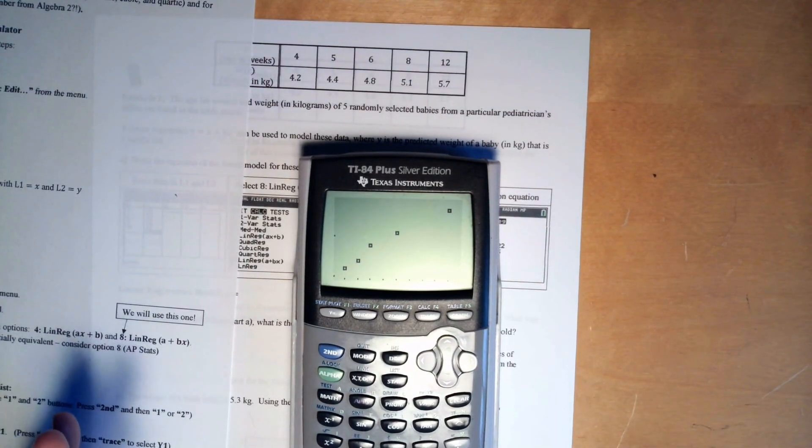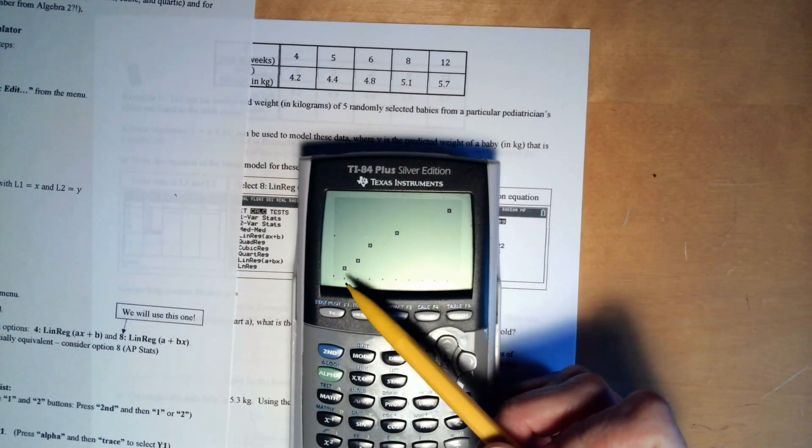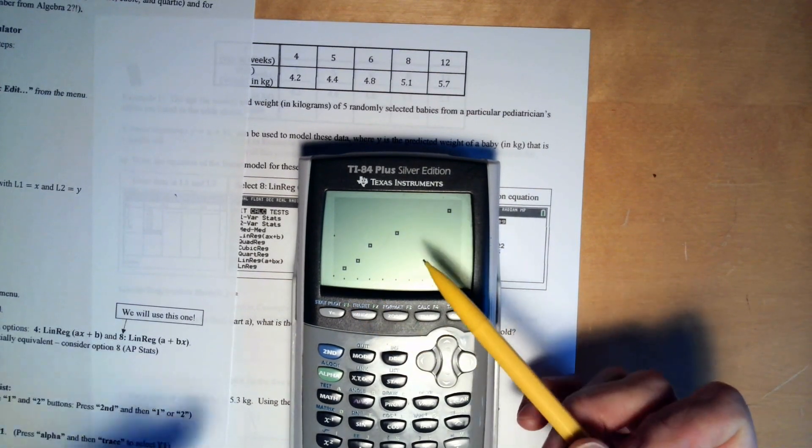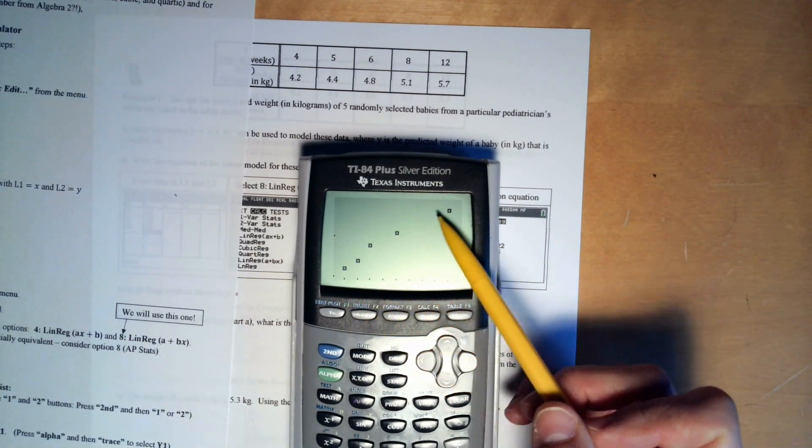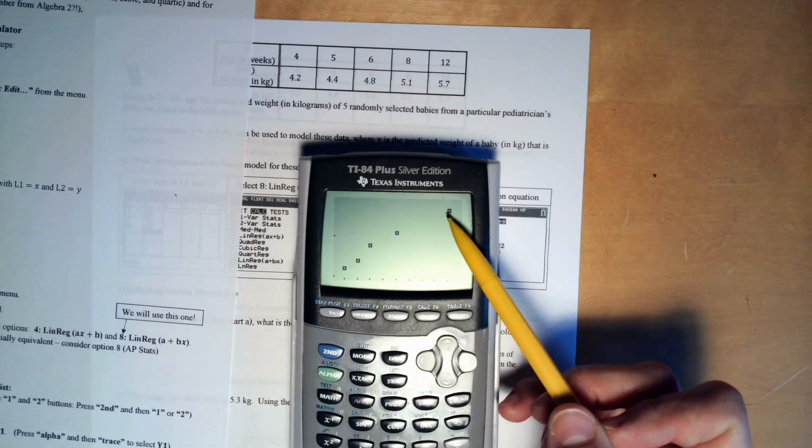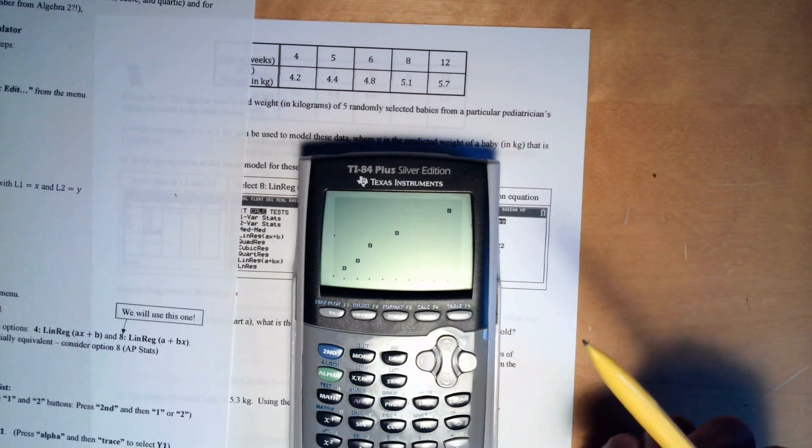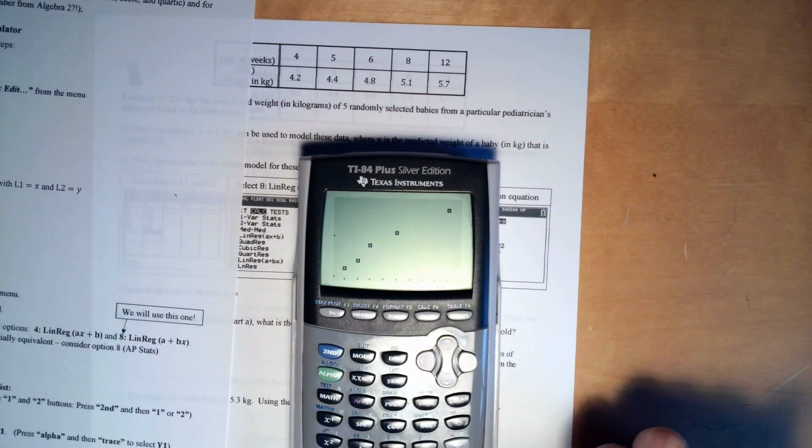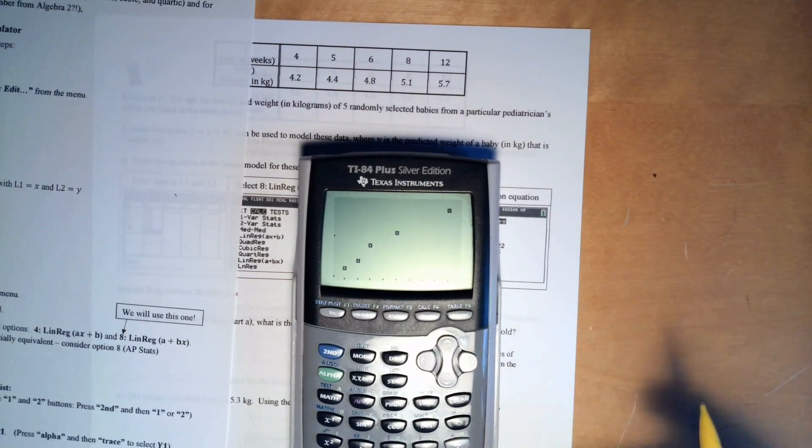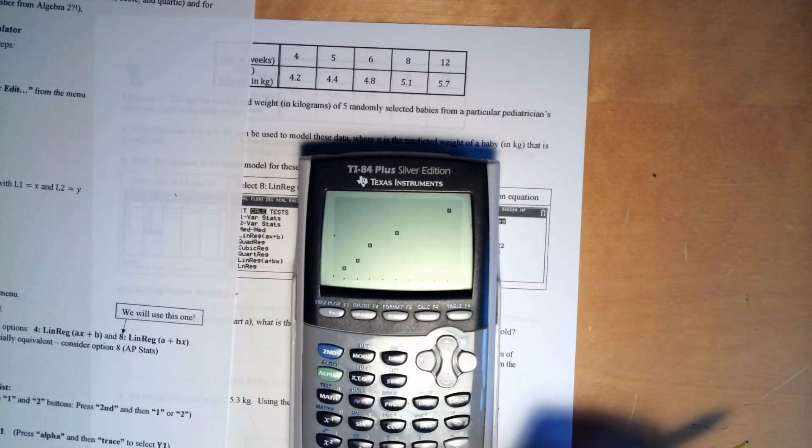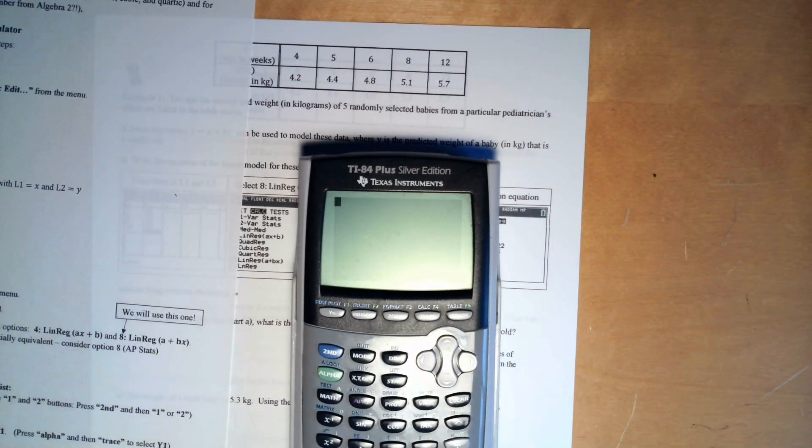So you look at this data and you're like, okay, well, I think it looks kind of linear. I don't know, maybe it could be something a little bit different. It does look a little bit of a curve to it, but just because you know from the problem it's a line, a linear regression. So we're going to go ahead and make the calculator do linear regression, which you've done in algebra two and hopefully algebra one.